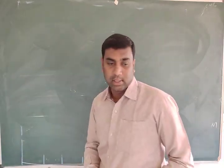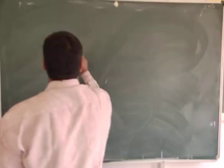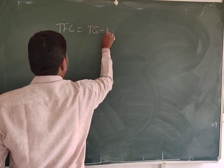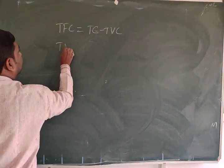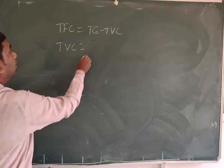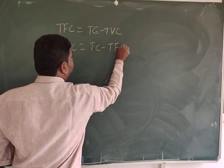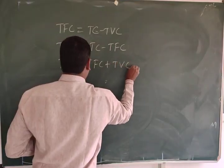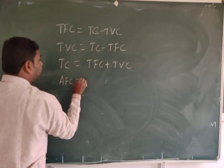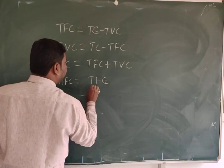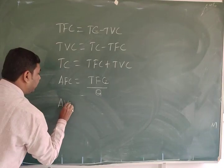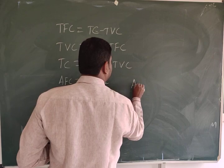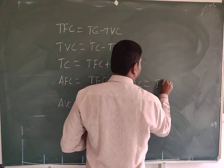Once again I will write the formulas for all of these. See clearly. The formula: TFC equals TC minus TVC. TC equals TFC plus TVC. AVC equals TVC divided by Q. AC equals TC divided by Q.